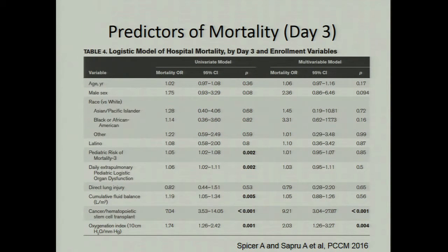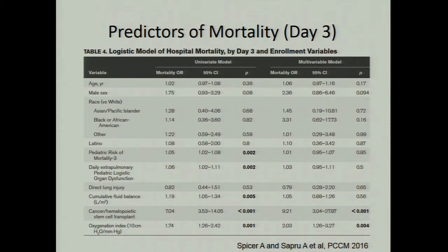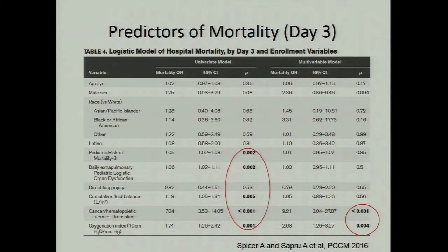At day three, looking at the same group of variables — PRISM score, organ dysfunction scores, cancer/HSCT, and OI — cumulative fluid balance also emerged as a factor: if the patient's cumulative fluid balance was high by day three, they were more likely to die. But again in multivariate analysis, just two things stood out as independent predictors: cancer/HSCT history and oxygenation index.